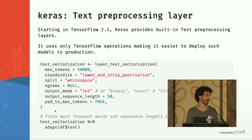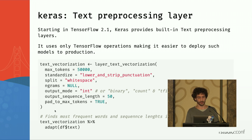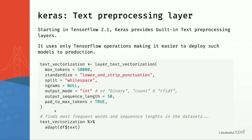In Keras, we have new text preprocessing layers, starting in TF 2.1. Before, the Keras preprocessing functions were all based on SciPy and NumPy, so to deploy models using text preprocessing functions in Keras you needed a Python runtime. Now they are built into the TensorFlow graph, so you can build models using layer_text_vectorization and deployment will be much easier.